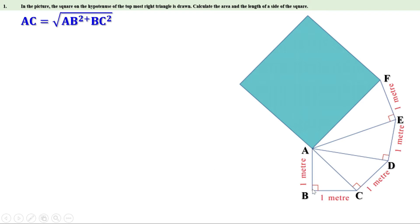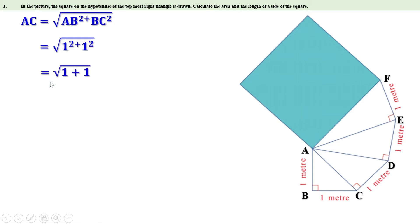AB is 1 meter and BC is also equal to 1 meter. Therefore, this can be written as root of 1 square plus 1 square, which equals root of 1 plus 1. Since 1 plus 1 is 2, AC equals root of 2.